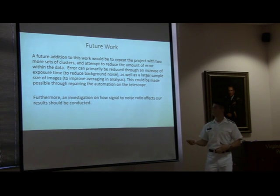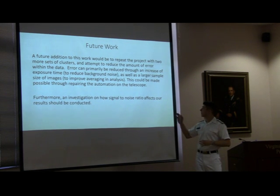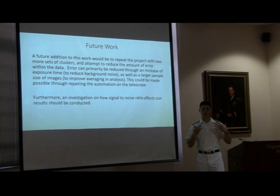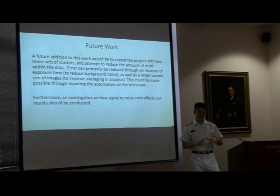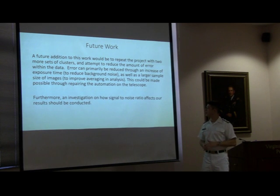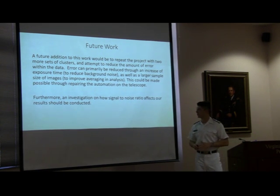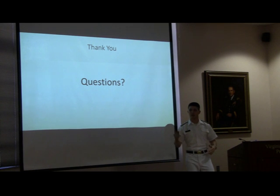As for future work: we would like to reduce some of the error in this project. That can be done with an increase in exposure time — if you leave the aperture open longer, you're able to get a better image — as well as a larger sample size of images. This could be done more effectively if we repair the automation of the telescope. Right now it's tedious: we're going up and changing everything, following the stars, and making sure we're getting our data. But if you could automate it, you could just let it run, take more images, and take it for longer. And as I mentioned, the signal-to-noise ratio is another thing we'll need to look at in the future. I'd like to thank you all for coming out. I'll open the floor for questions.